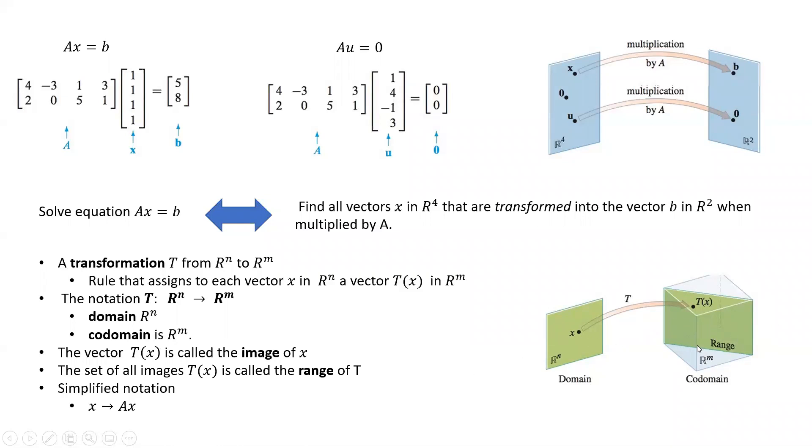By the way, the range can be the same dimension as our codomain R^m, or it can be smaller. We will look at several examples where the range is less than the codomain.